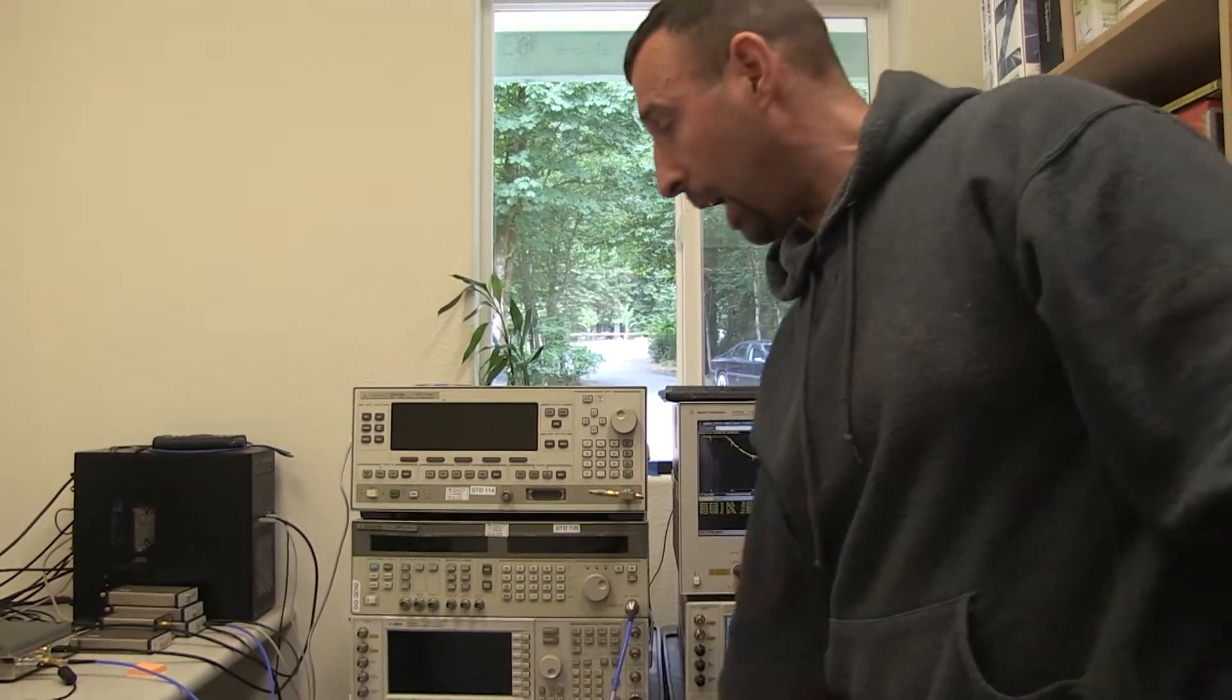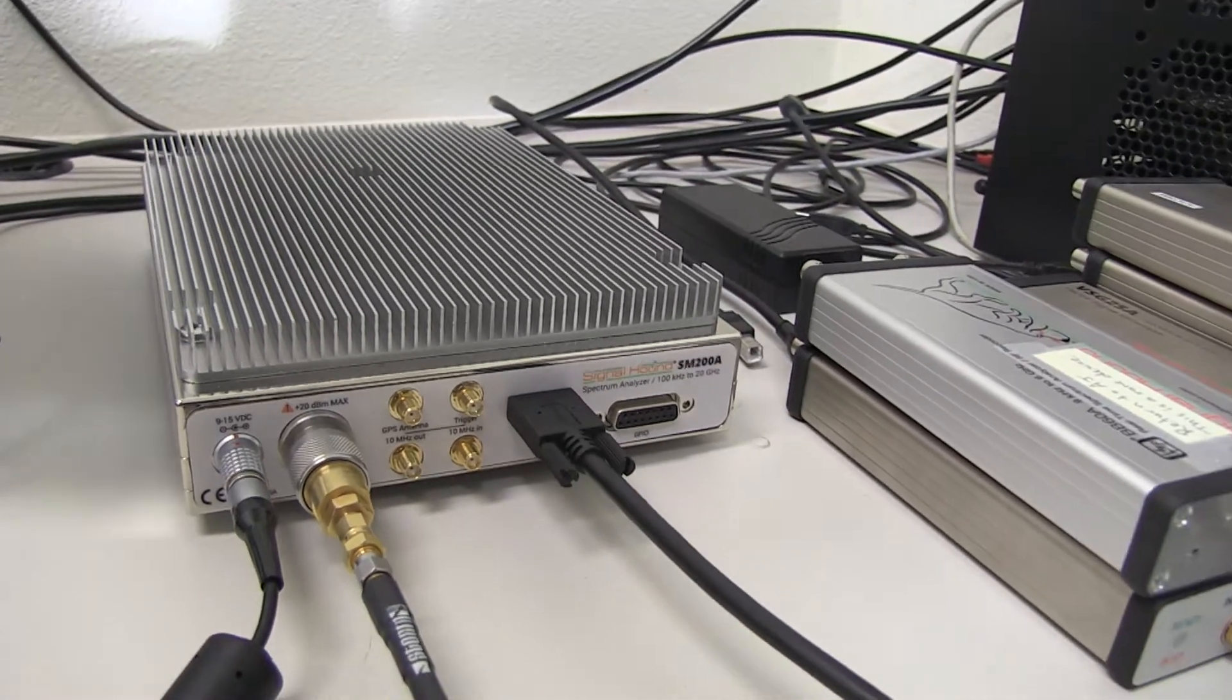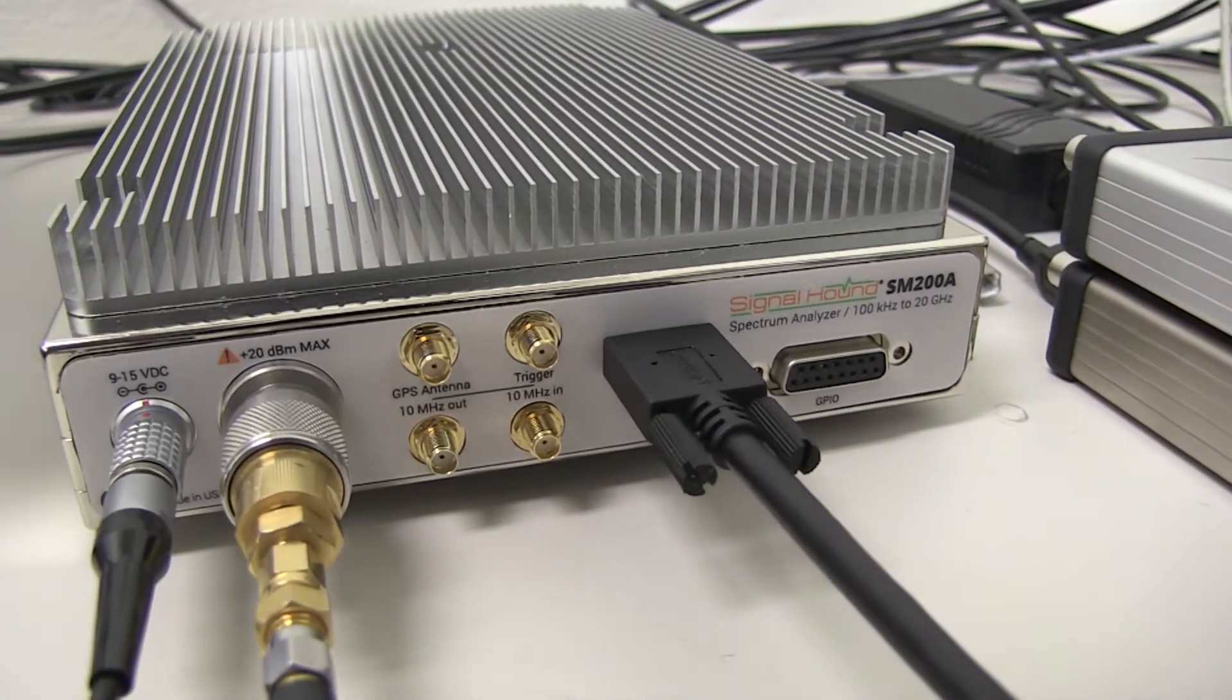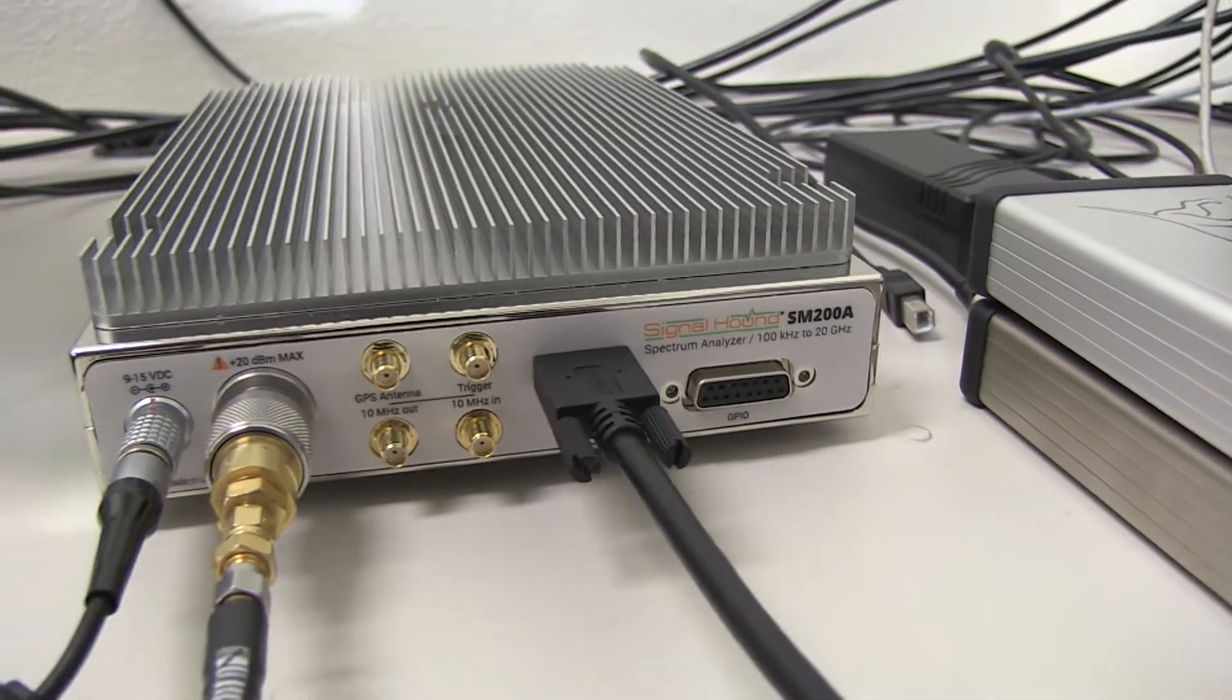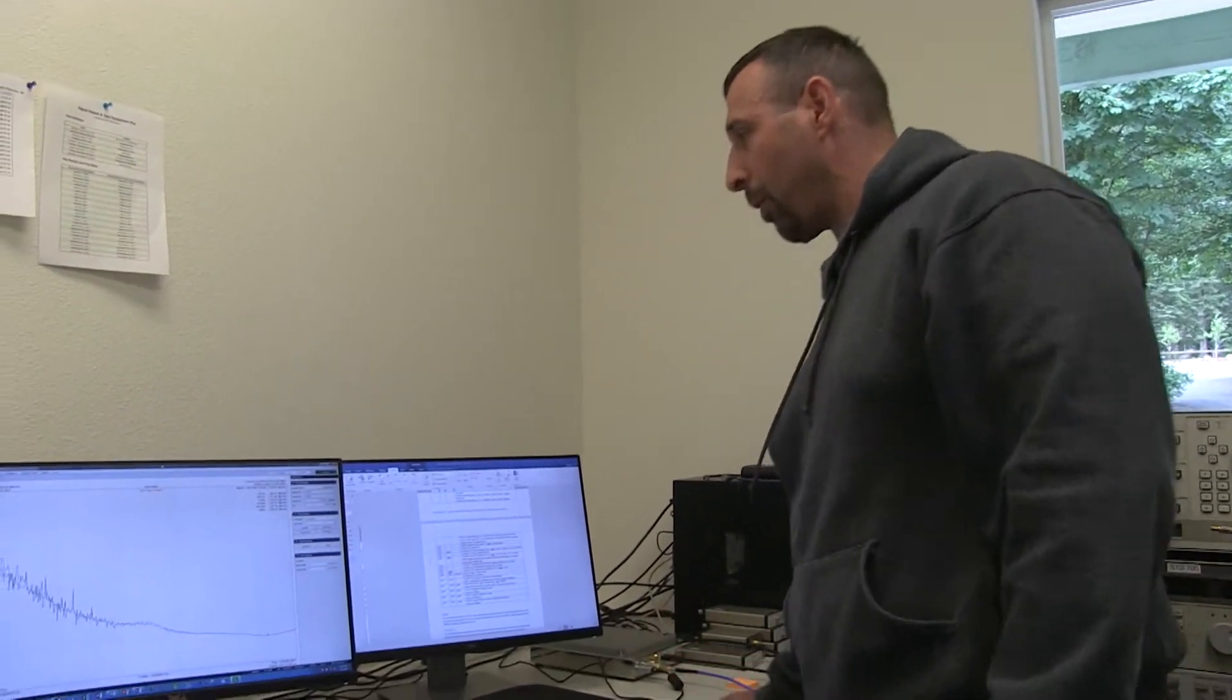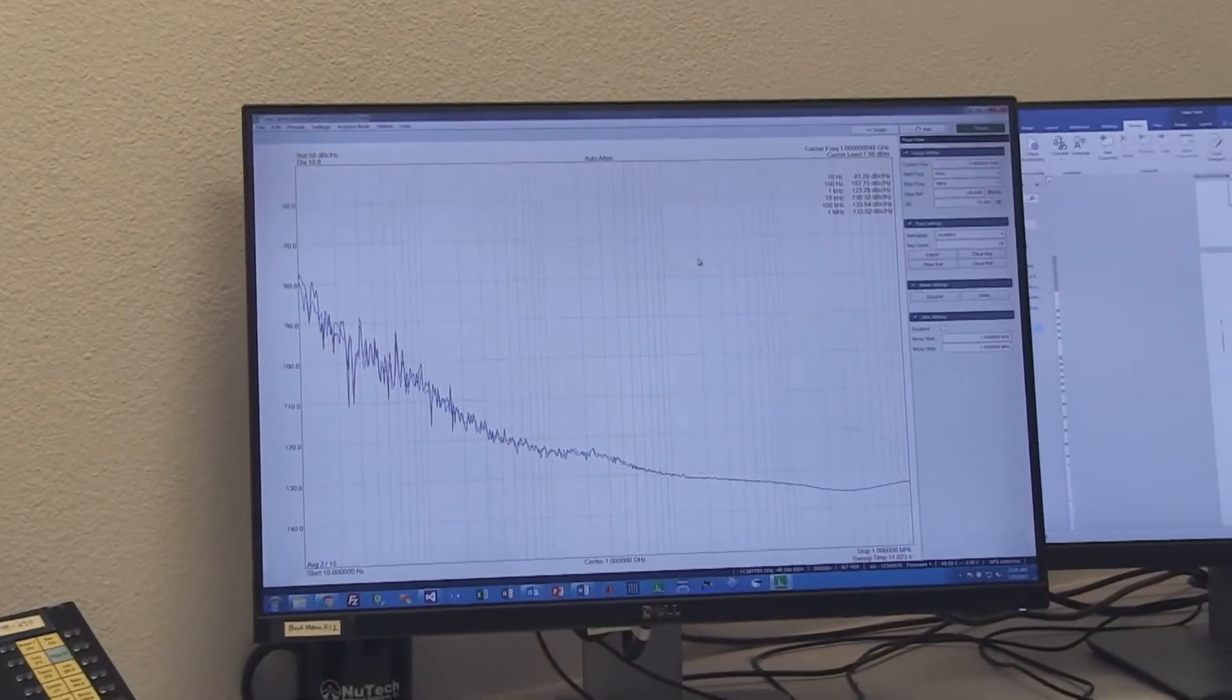So today we're going to take the signal out and go into our Signal Hound SM200. The SM200 is a 200 kHz to 20 GHz, and this box is selling for around $12,000. So brand new, this is around $12,000, but we want to demonstrate the phase noise capability of this instrument.